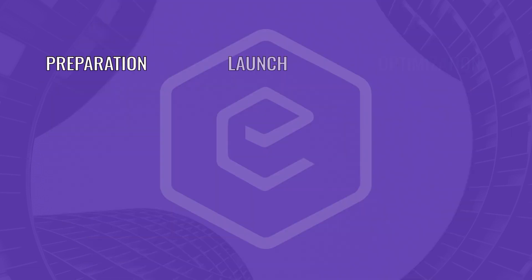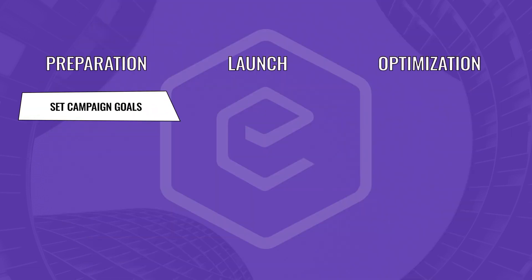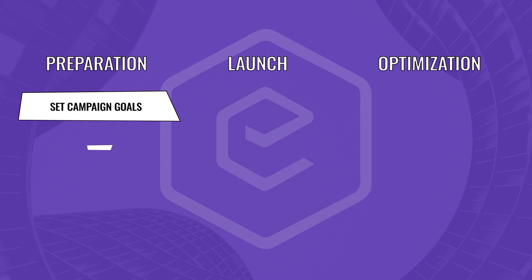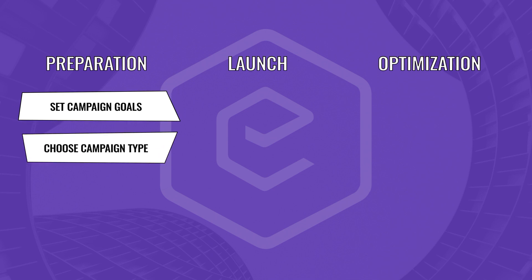During preparation, you set your advertising campaign goals — these can be increasing brand awareness, obtaining more control over your CPMs, or getting more installs on your apps. Next, you choose the type of campaign depending on the creative you have: it can be banners, videos, native, or even rich media.